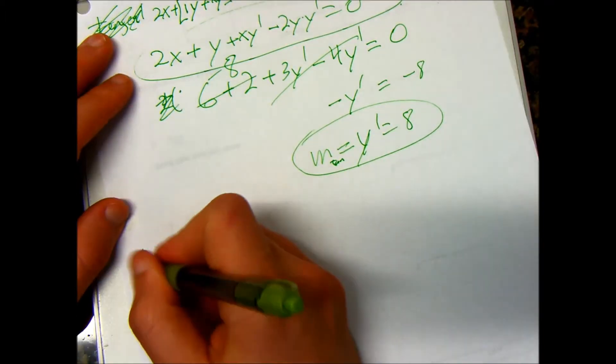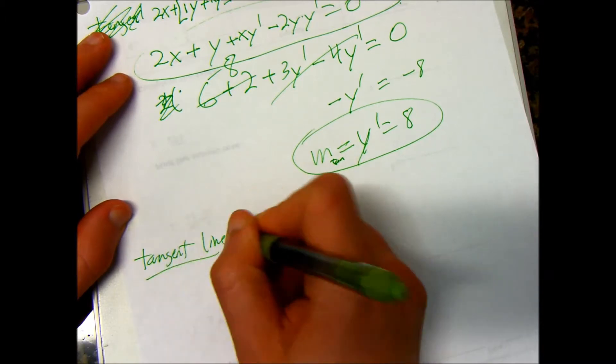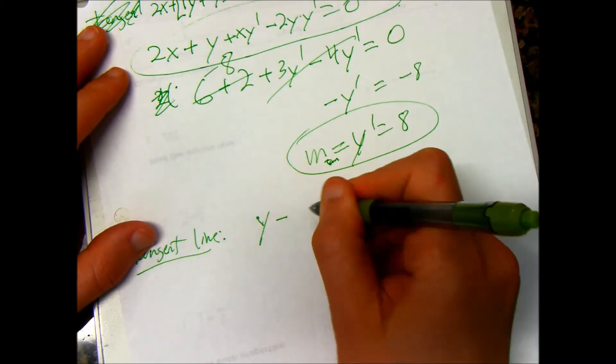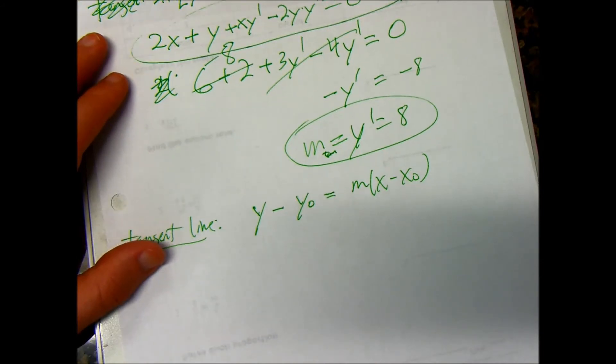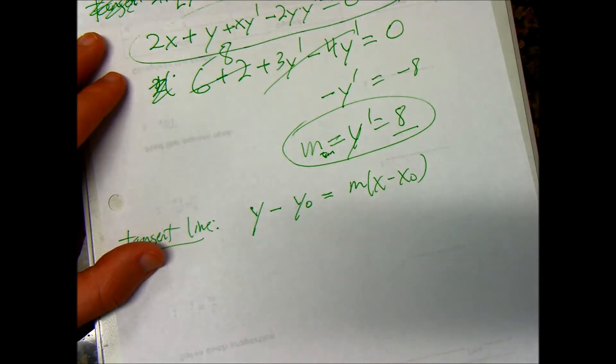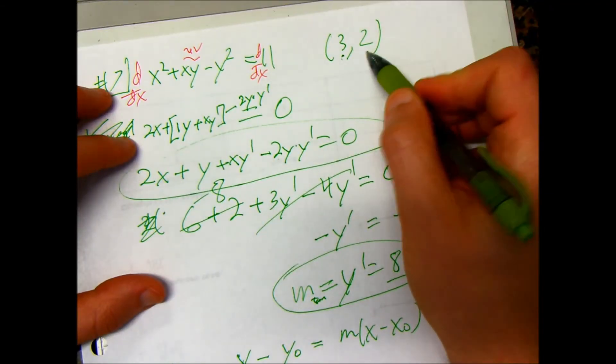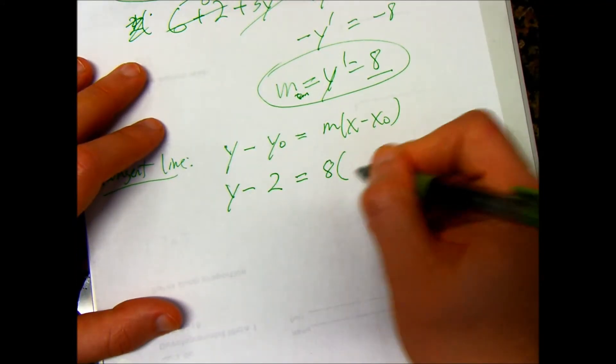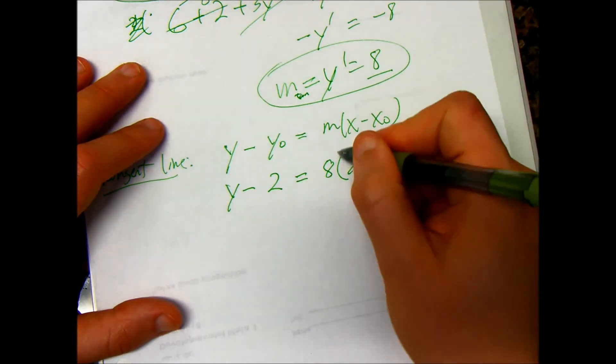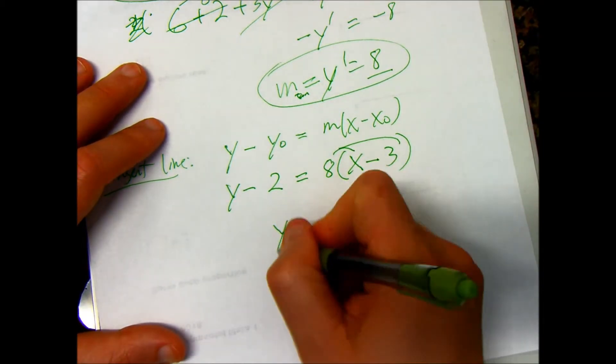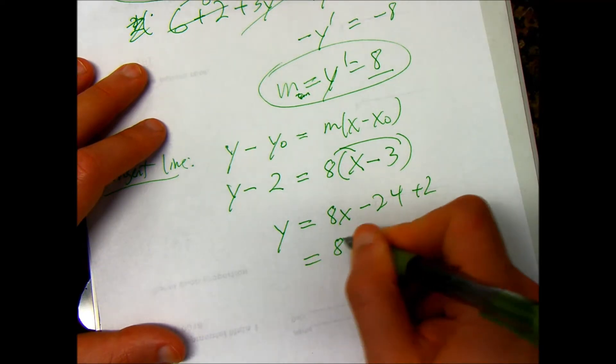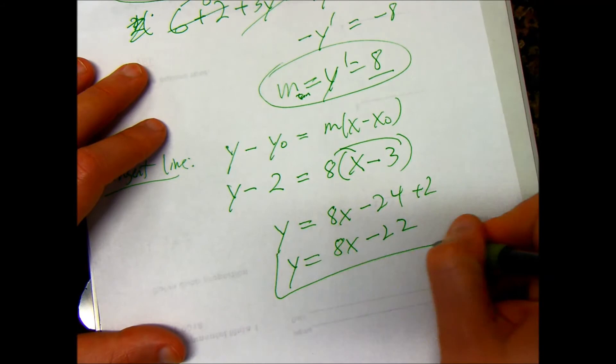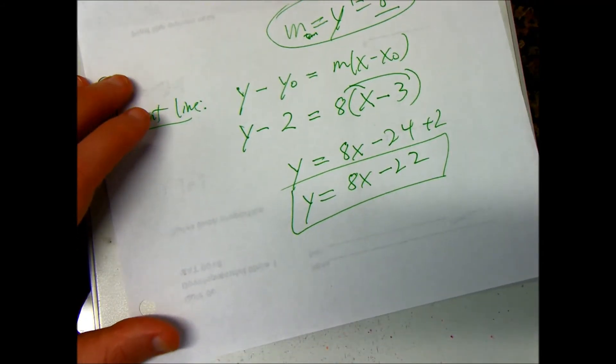So, to find the tangent line, I use y minus y0 equals m times x minus x0. And I have m right here. So, y minus 2, this is my y0, this is my x0. So, y minus 2 is equal to 8 times x minus 3. And then get it, let's get it into slope intercept, just in case they're asking for it. So, this would be 8x minus 24 plus 2. So, this is 8x minus 22.